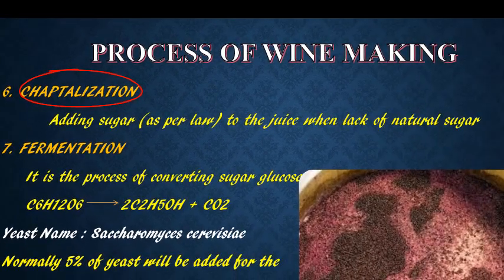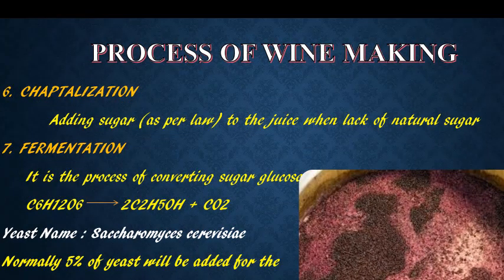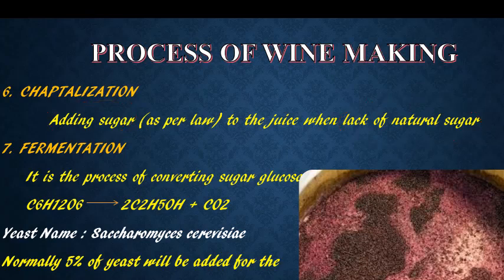The next step is chaptalization, which is an optional process. Chaptalization is nothing but adding extra sugar to the grape juice. Sometimes the grapes don't reach the desired amount of sugar naturally, so extra sugar is added to achieve the desired alcohol percentage. The extra sugar must be added as per the law — only the minimum required amount.